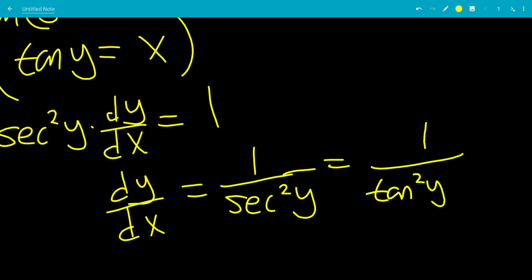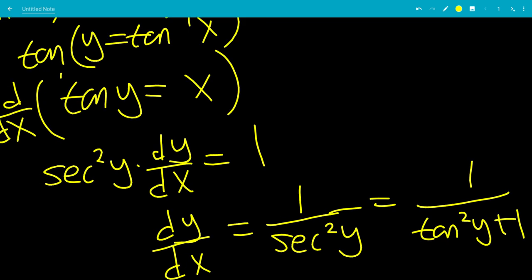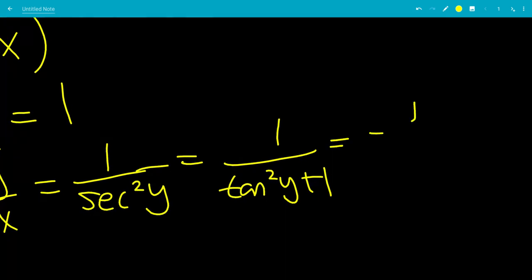So, this would be tangent squared of y plus 1. We know that tangent of y equals x, so tangent squared of y equals x squared. So, this is 1 over x squared plus 1.